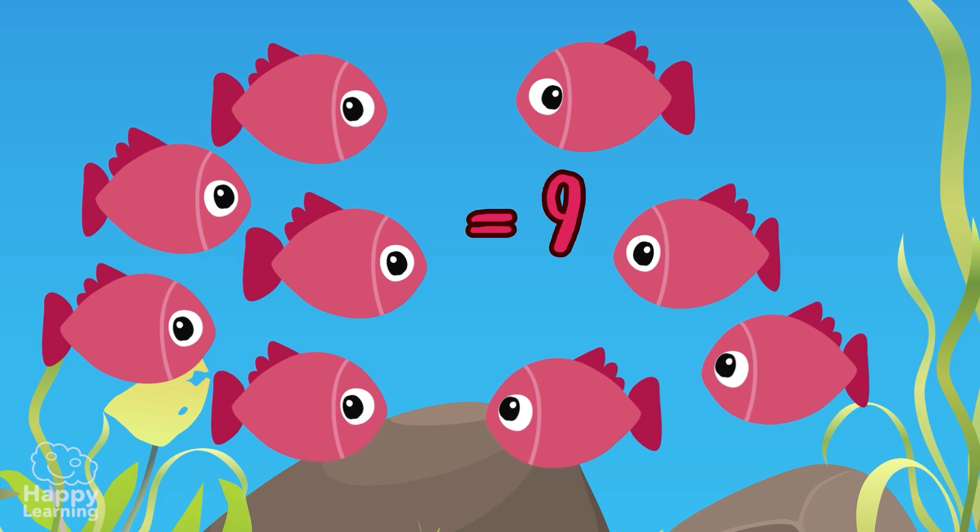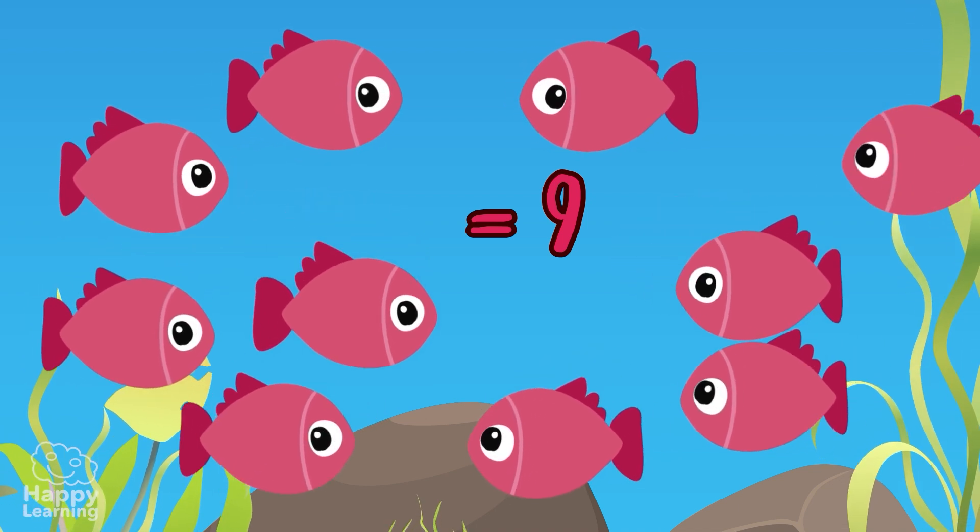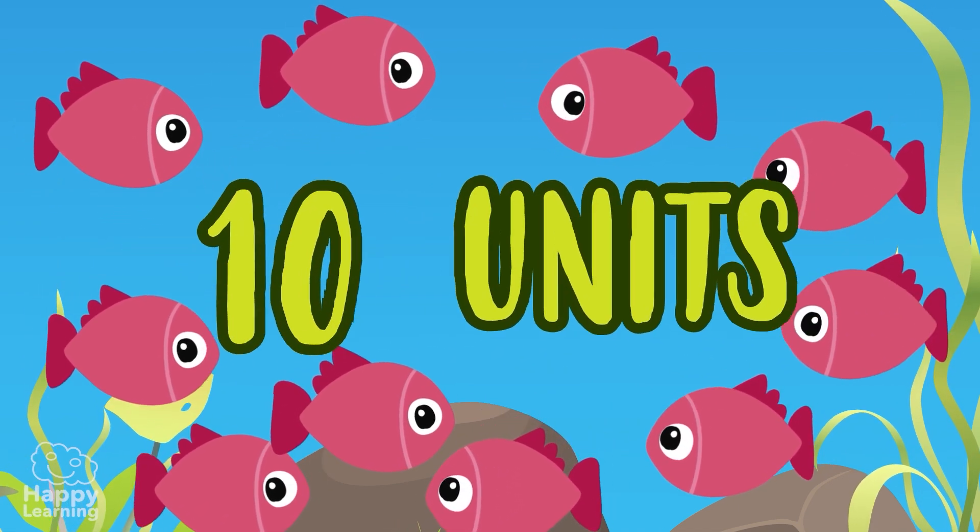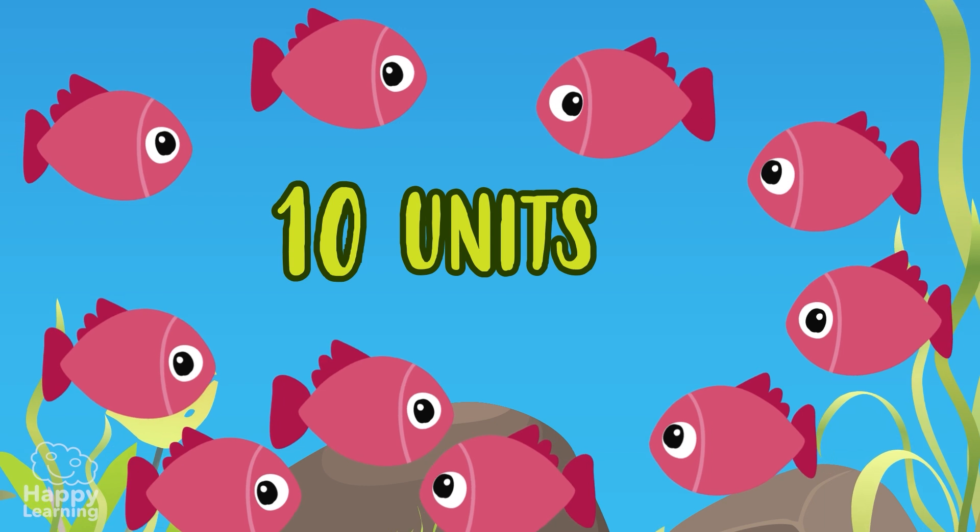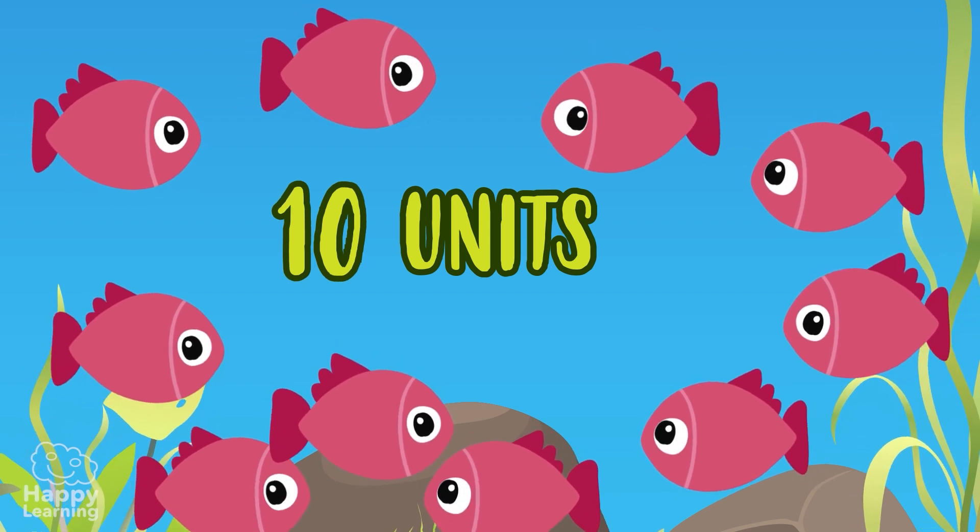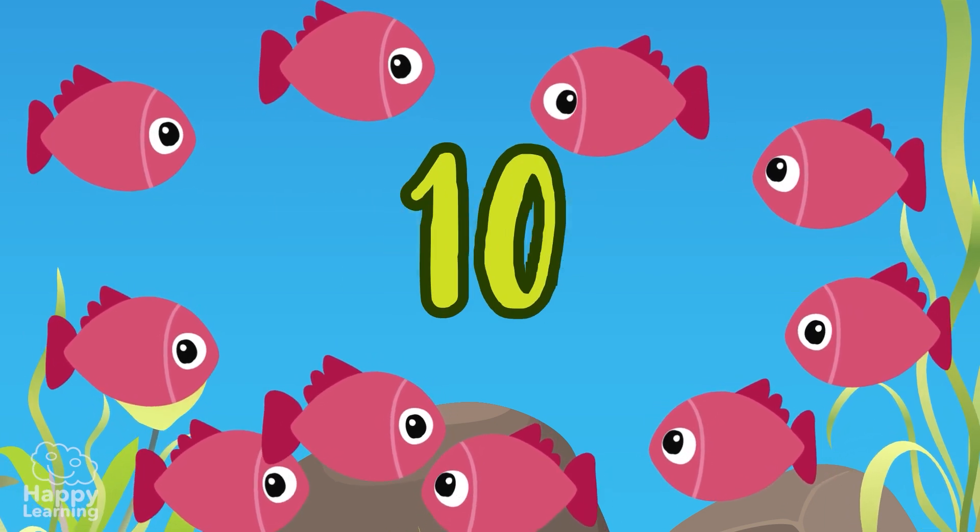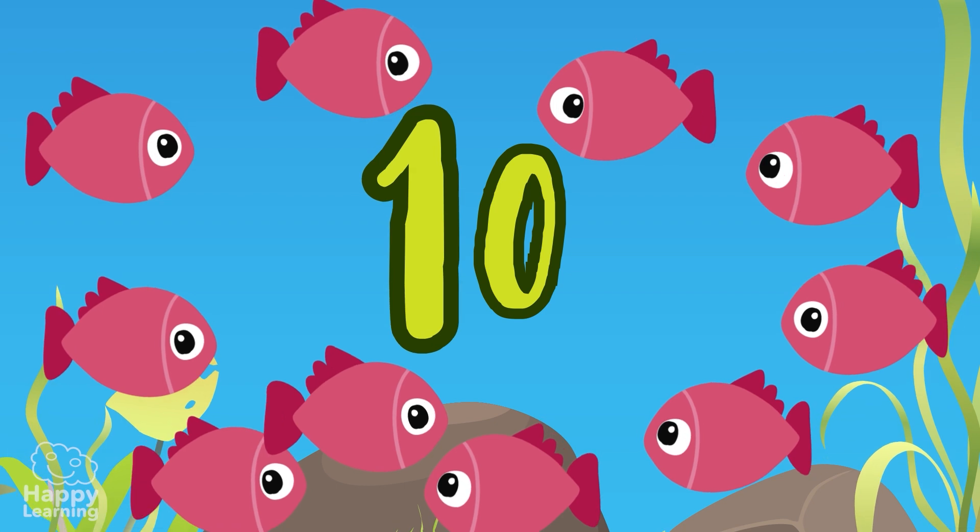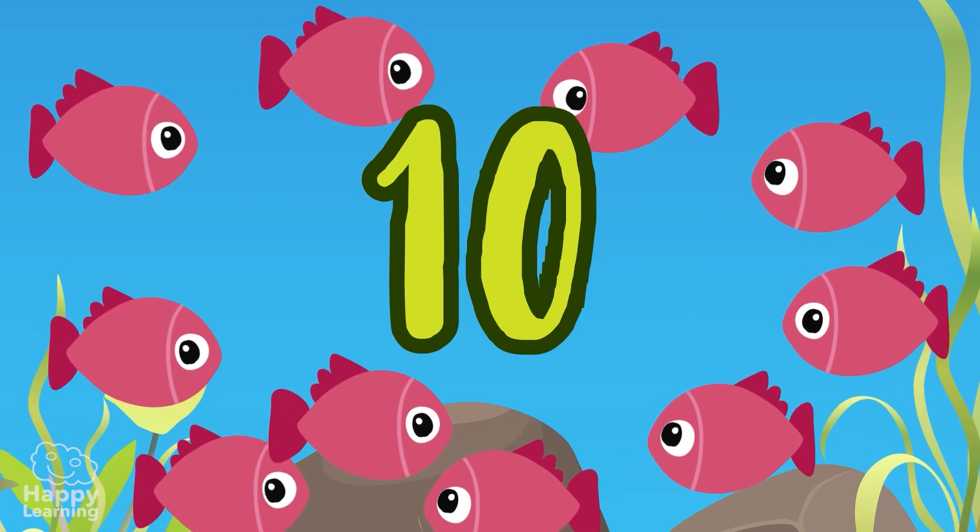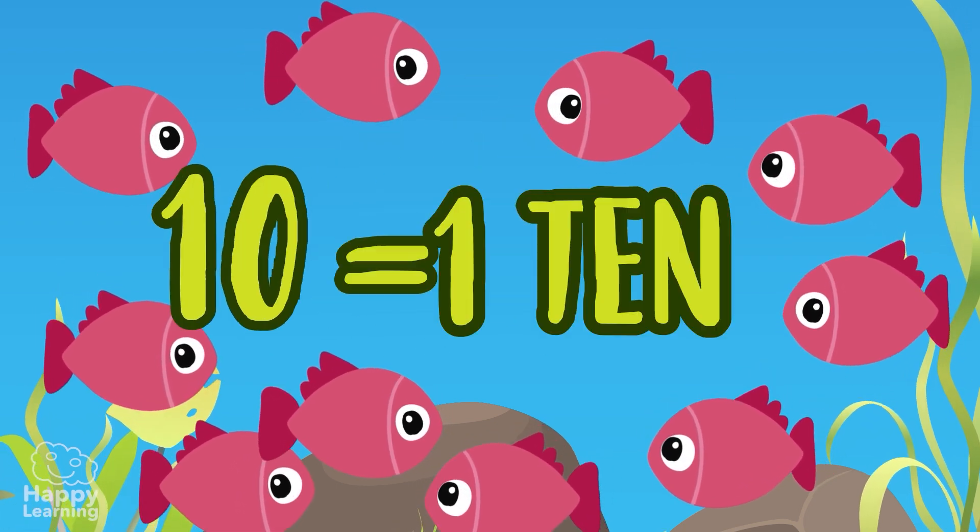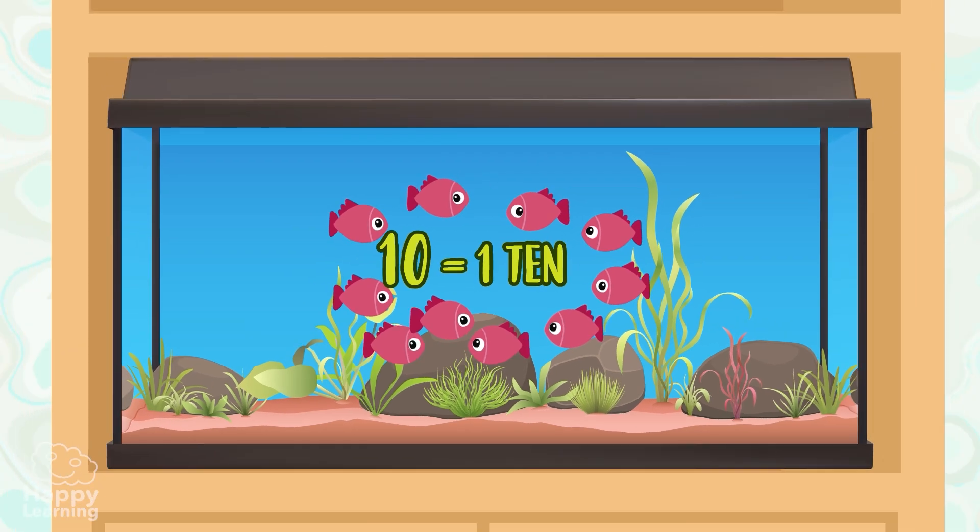Wow! So many fish! One more and we will have ten. Ten units! Do you see what happens with the number ten? We now have two digits: the one and the zero. We have a ten, because ten units make a ten.